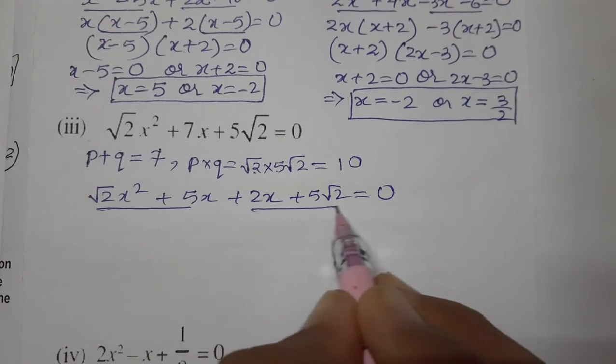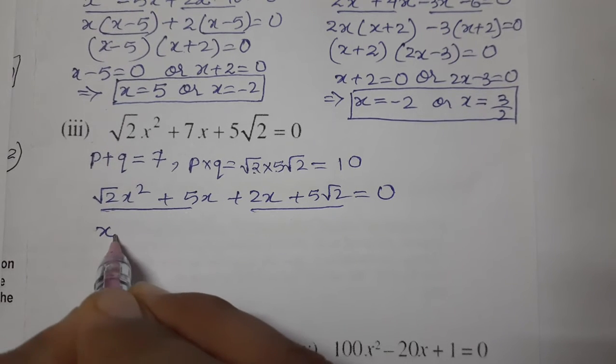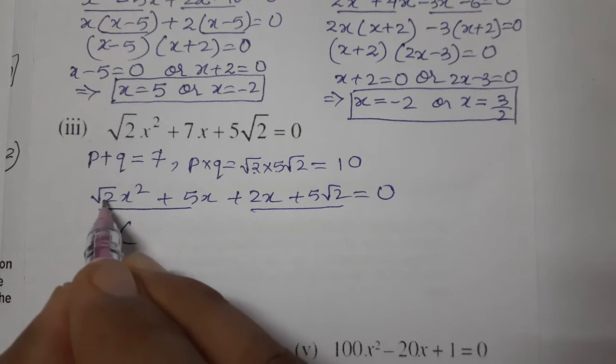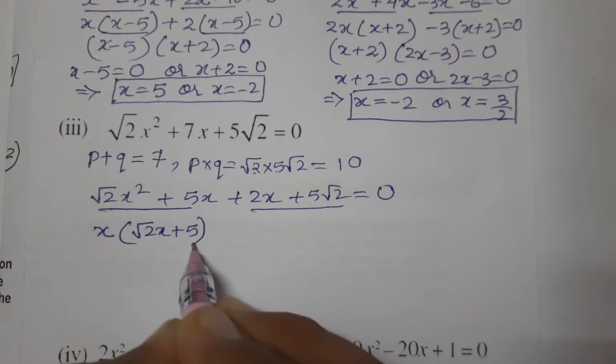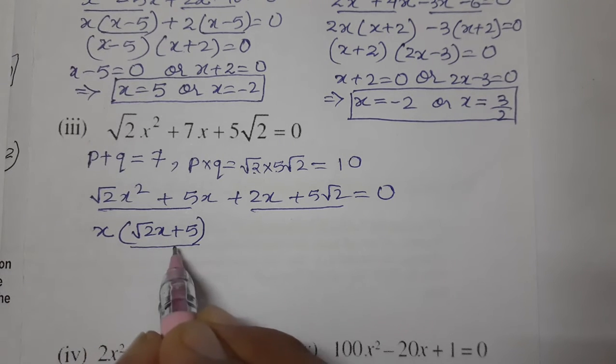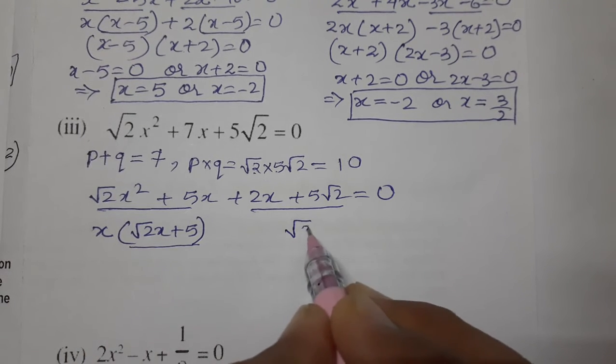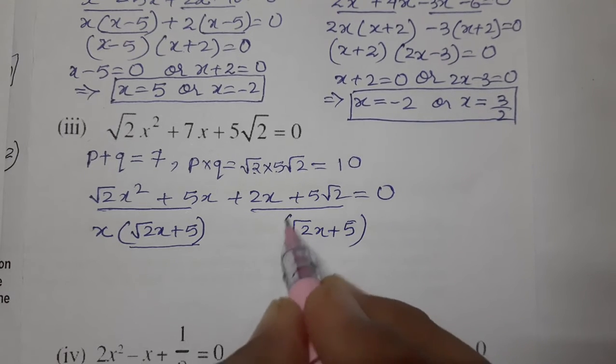Now take common factors. x is common, so taking x common: x(√2x + 5). Now comes a very important point: whatever expression you get here, write the same one here. Otherwise you will face difficulty.